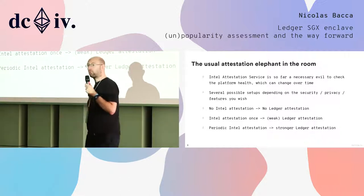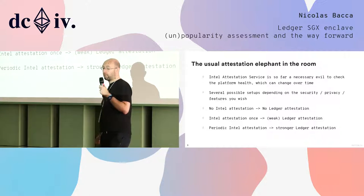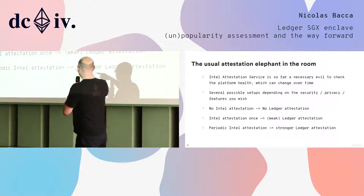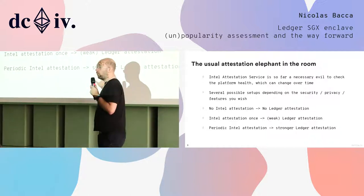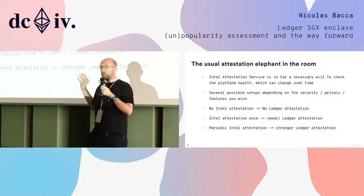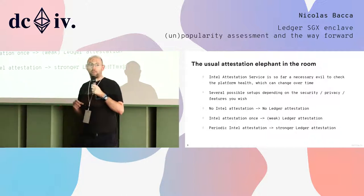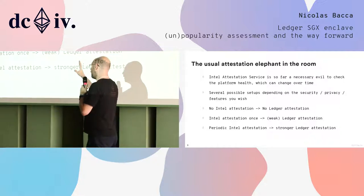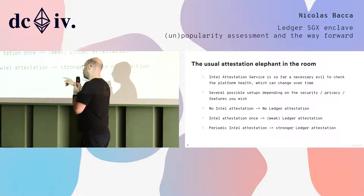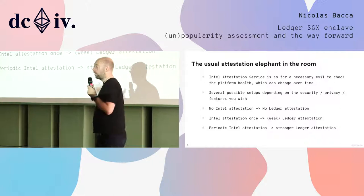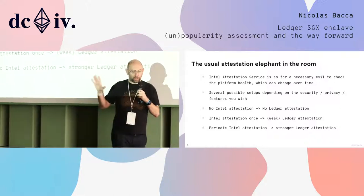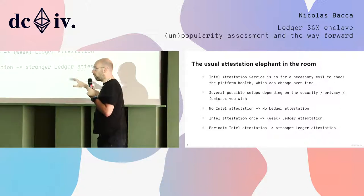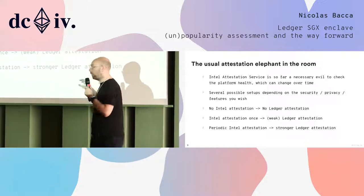It's a choice. If you want to run your wallet on your own side, you can do that. You can run Intel attestation once and get a weak Ledger attestation — I call it weak because it will not be up to date regarding the health of your platform, which can change. But if you run Intel attestation from time to time, you can get a stronger attestation. The biggest difference compared to IAS attestation today is that it's something you can validate on-chain.